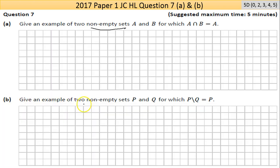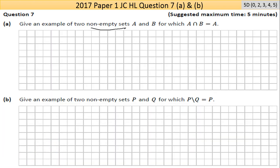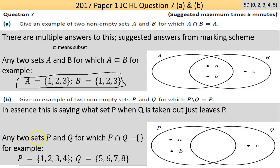Now part B: give an example of two non-empty sets P and Q for which P take away Q equals P. So look at this here, P take away Q is equal to... let me read the marking scheme to figure this out. It's for which P intersection Q is the null set.